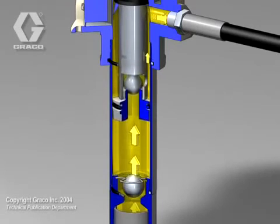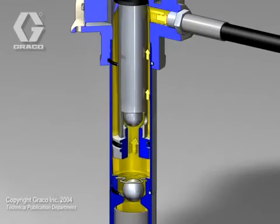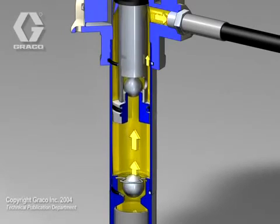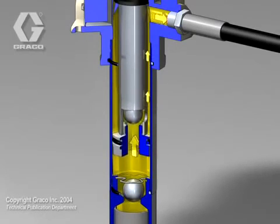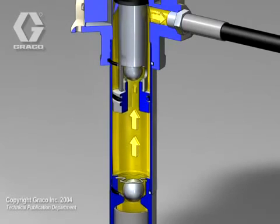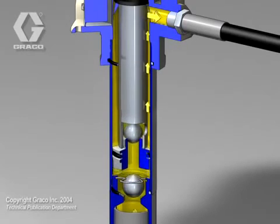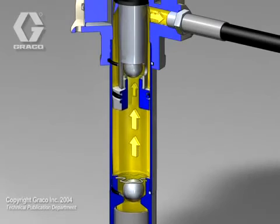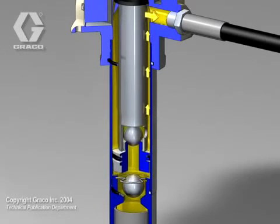As the piston rod continues on the downstroke, the fluid trapped in the cylinder transfers past the upper ball check through holes in the piston rod. Since the fluid piston rod is half the size of the cylinder, half of the fluid trapped in the cylinder is pumped on this same downstroke.